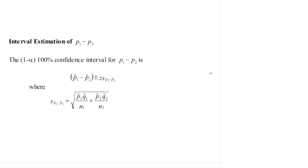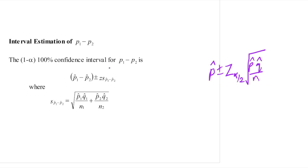For one population proportion, the confidence interval is p-hat plus or minus z-alpha-over-2 times the square root of p-hat q-hat over n. So the confidence interval for p1 minus p2 is an extension of the previous formula we have discussed. Because the sample size is large, we would use the normal distribution.